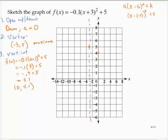So this point is three units on one side of the axis. So we go three units on the other side. And we would have this point at (-6, 4.1).